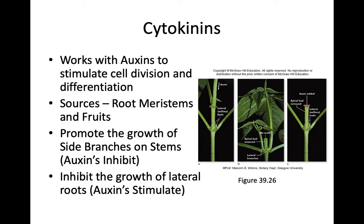Cytokinins are called cytokinins because they were found to promote the synthesis or activation of proteins specifically required for cytokinesis. Remembering cytokinins and cytokinesis together will help you recall that they're involved in cell division and differentiation. The first time cytokinins were discovered, scientists had to use coconut milk to grow cells in culture because coconut milk was rich in these cytokinins. Cytokinins work in concert with auxins to stimulate cell division and differentiation in plants. They are produced in root meristems and in fruits, and promote the growth of side branches on stems.